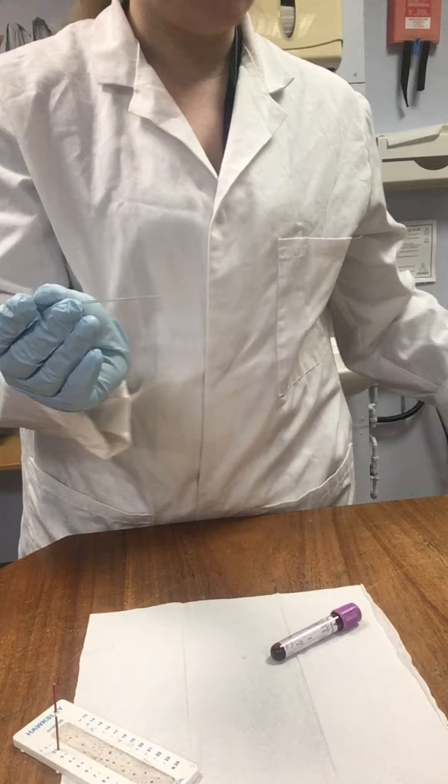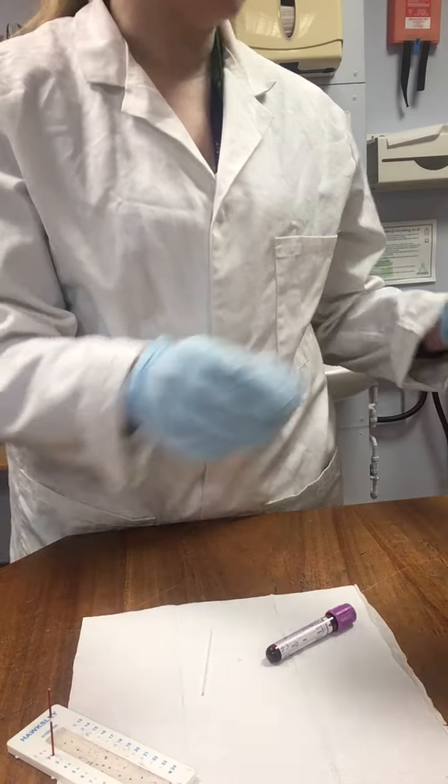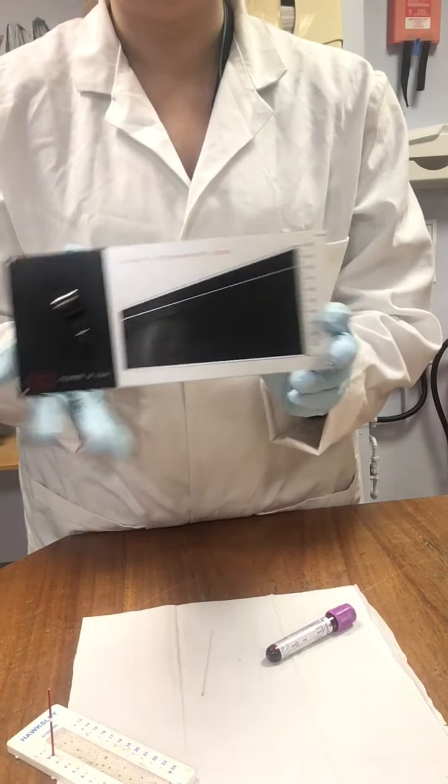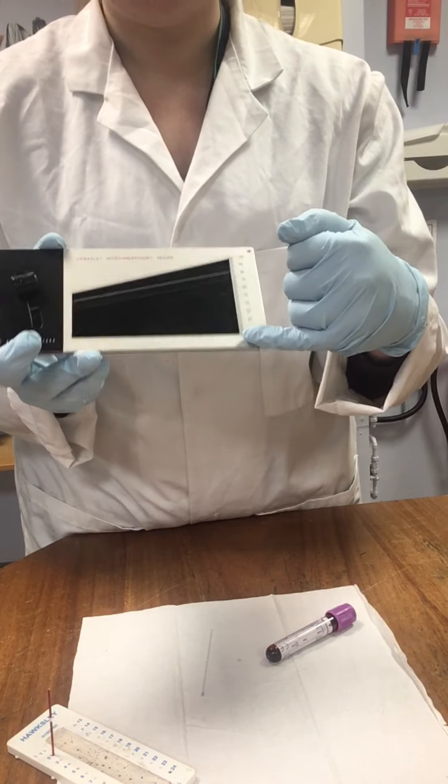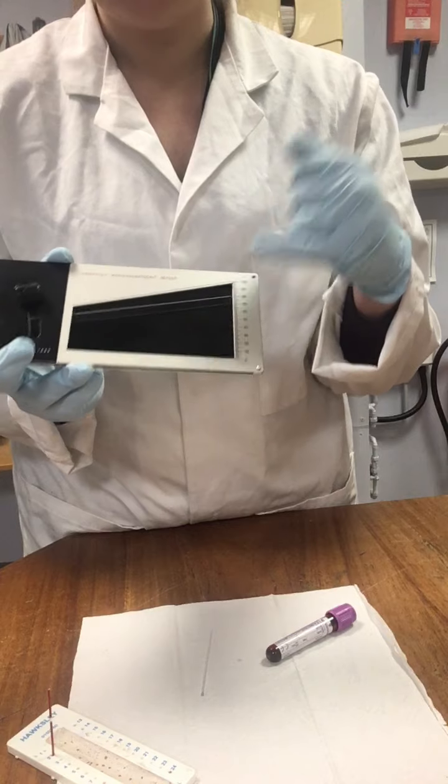Now, for this particular test, we are going to use what's called a Hawksley reader, which looks like this. And as you can see, we have got a scale up the side. So, we want to make sure that we have enough blood to fit that.